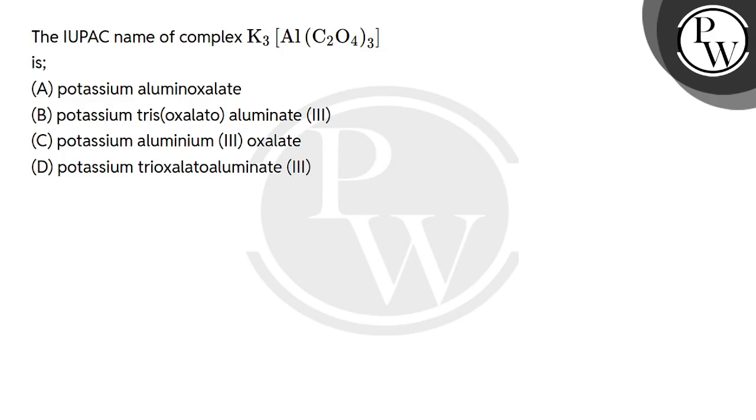Hello students, let's do this question. The question says the IUPAC name of complex K3Al(C2O4)3 is, with four options.